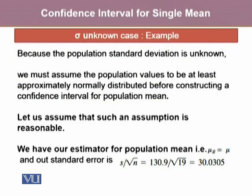Because the population standard deviation is unknown, we must assume that the population values are at least approximately normally distributed before constructing a confidence interval for the population mean. Let us assume that such an assumption is reasonable. Our estimator for population mean is x-bar equals mu, and the standard error is S over the square root of n, which equals 130.9 divided by the square root of 19.